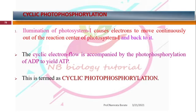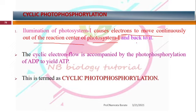So what is cyclic photophosphorylation? During this process, there is involvement of only photosystem I. The electrons move continuously out of the reaction center of photosystem I and again come back to photosystem I — meaning there is a cyclic transfer of electrons. During this process, there is synthesis of ATP molecule from ADP and inorganic phosphate. It is therefore called cyclic photophosphorylation.